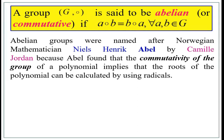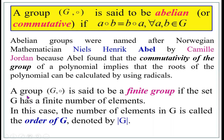Abelian groups were named after Abel because he found that the commutativity of the group of a polynomial implies that the roots of the polynomial can be calculated using radicals. A group will have four axioms, whereas an abelian group will have five axioms. A group G comma circle is said to be a finite group if G has a finite number of elements, and an infinite group if it has an infinite number of elements. The number of elements in G is called the order of G.